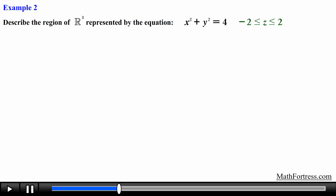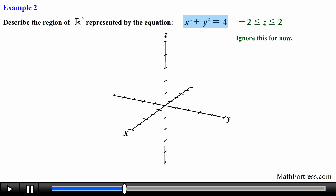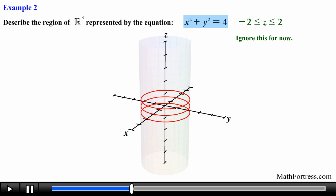Let's try the next example: describe the region of R cubed represented by the equation x squared plus y squared equals 4 when z is between negative 2 and 2 inclusive. When dealing with these problems, it's best to ignore the restrictions first. This equation represents a cylinder in R cubed — x squared plus y squared equals 4 is a circle in the xy plane, and without restrictions we create a copy of this circle on every value of z.